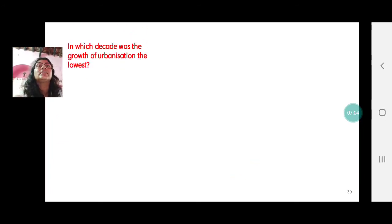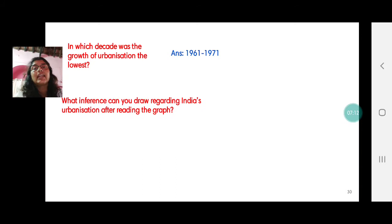The next question is in which decade was the growth of urbanization the lowest. We have seen that it was 1961 to 1971 and it was 0.2 percent.